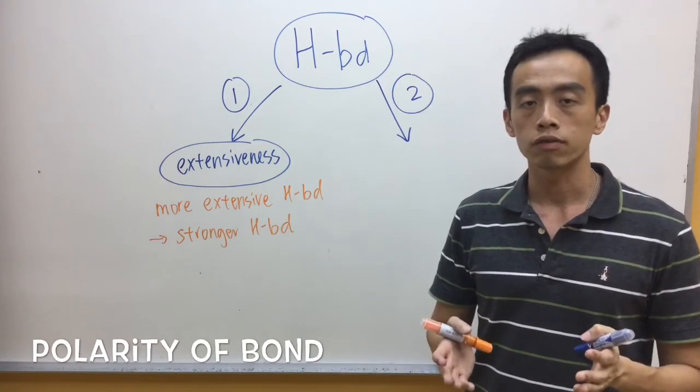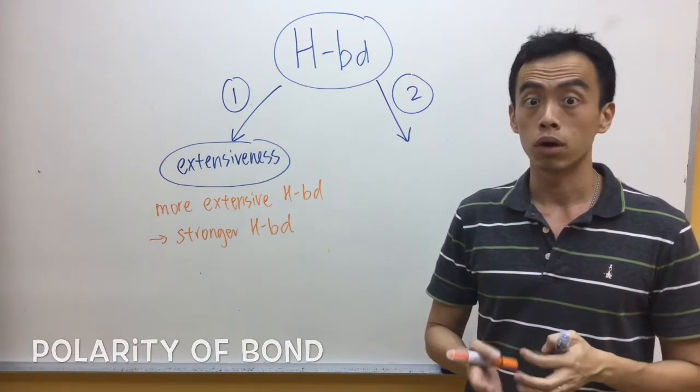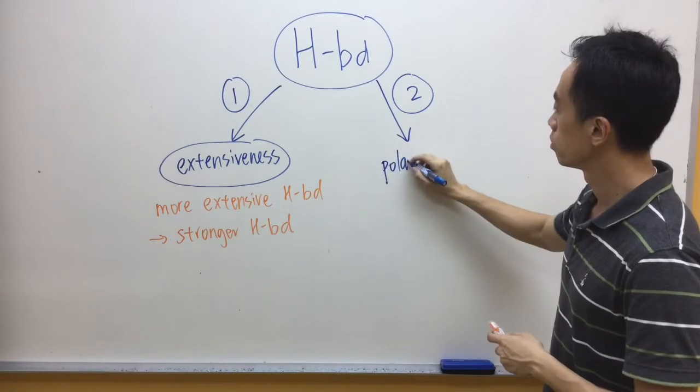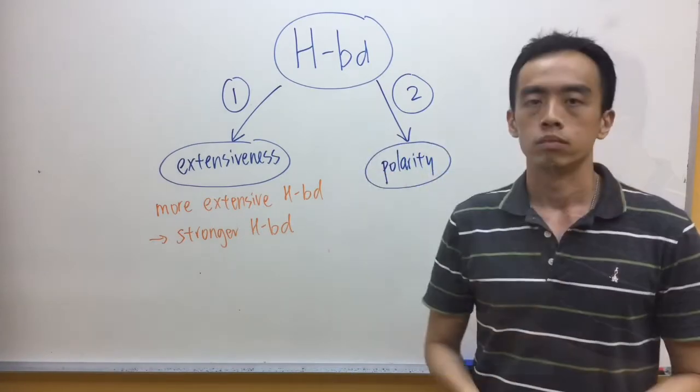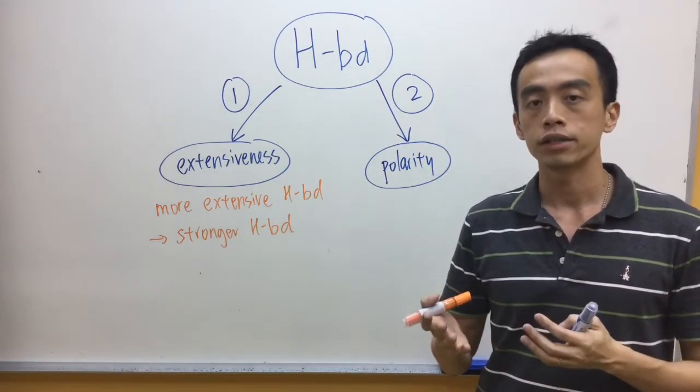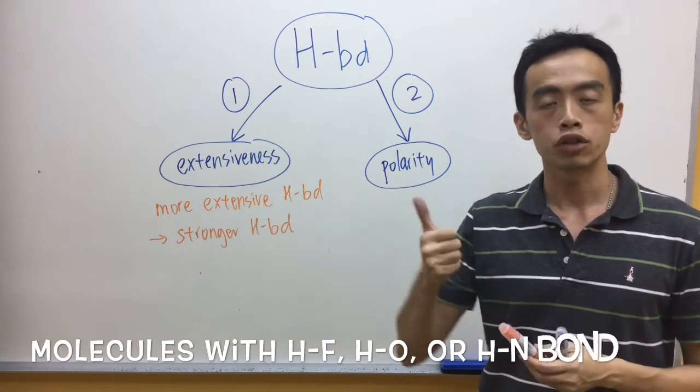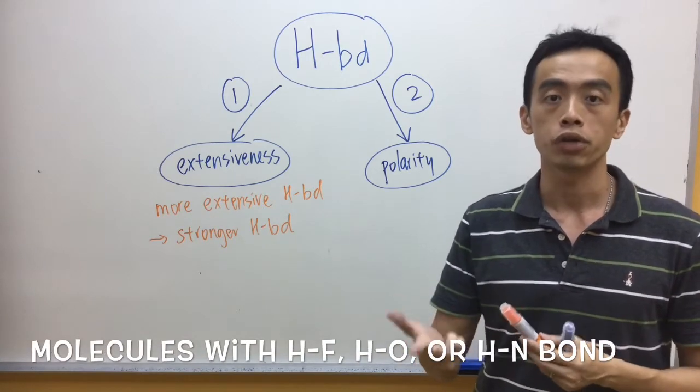The second factor affecting the strength of the hydrogen bond is the polarity of the bond. We have three different types of bonds that qualifies for hydrogen bond, which is HF bond, HO bond and HN bond.